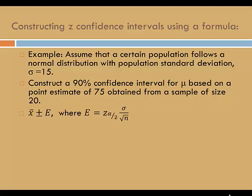The formula we'll use is x-bar plus or minus E, where E is equal to z of alpha over 2 times sigma over the square root of n. We can look up z of alpha over 2 from the table on the previous slide. It's 1.645.